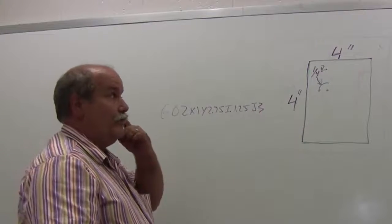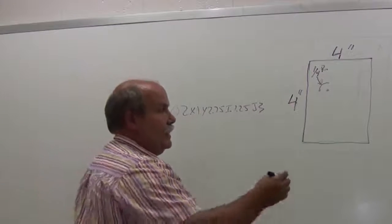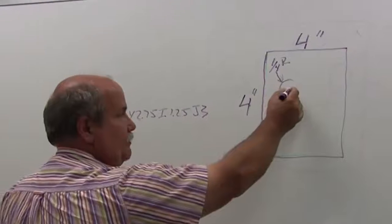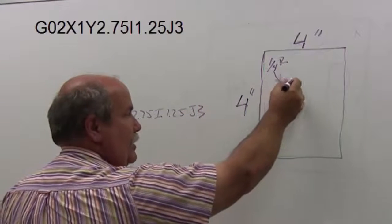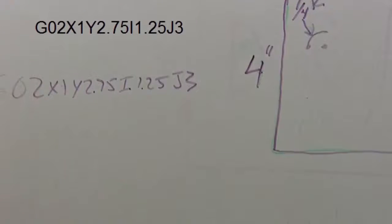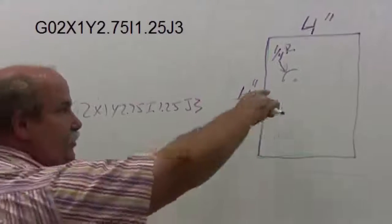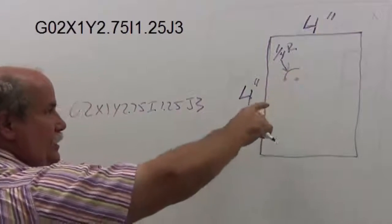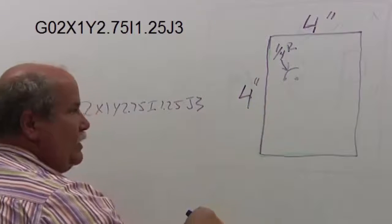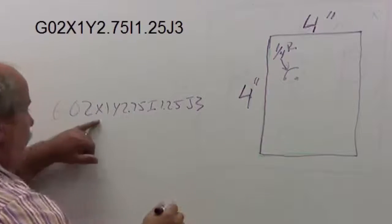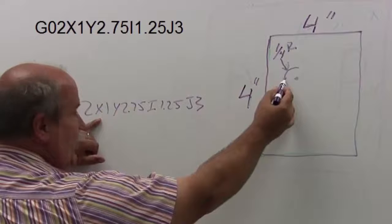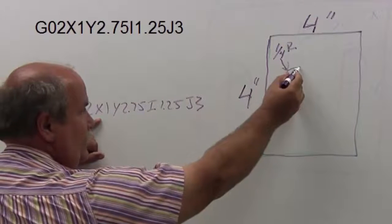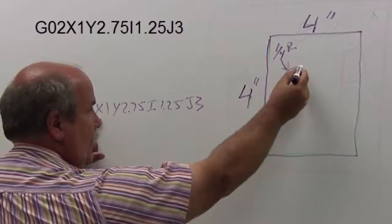Okay, we're going to talk today briefly about I and J. I and J is a point that you have a radius or a diameter, and it knows it's going to circle about that point, so you keep a consistent radius. In this case, we're going to do a quarter-inch radius, our starting point X, and we're going to finish at this point here with X and Y.